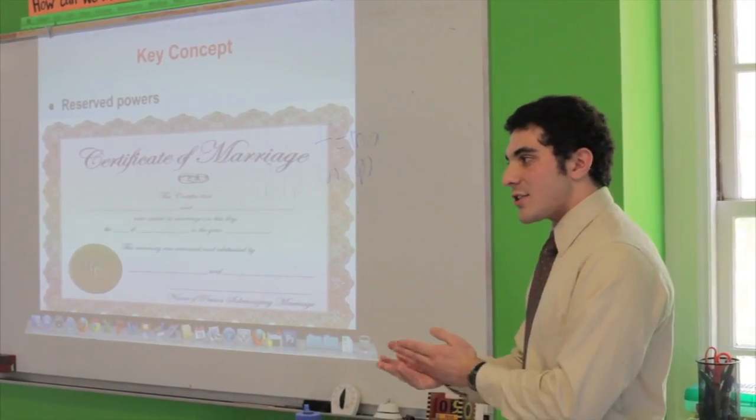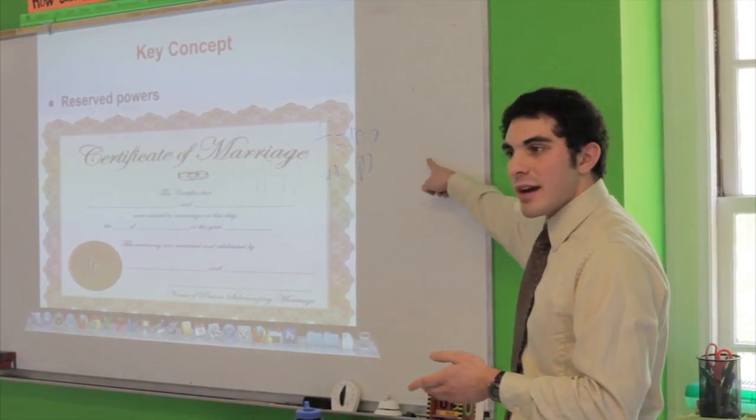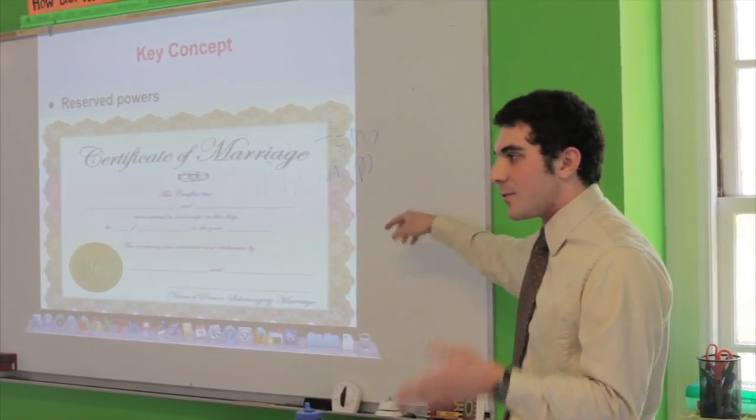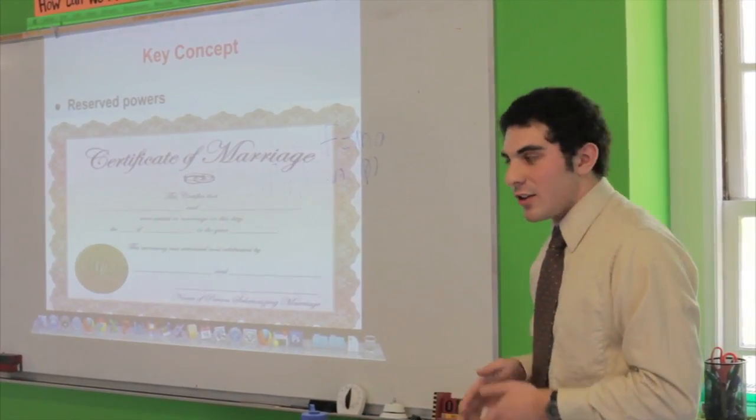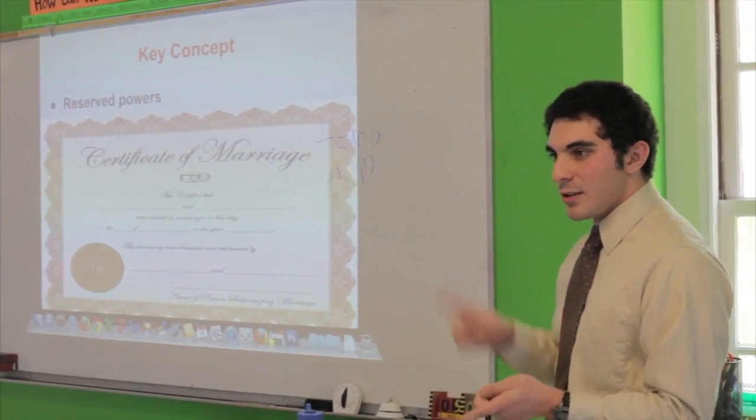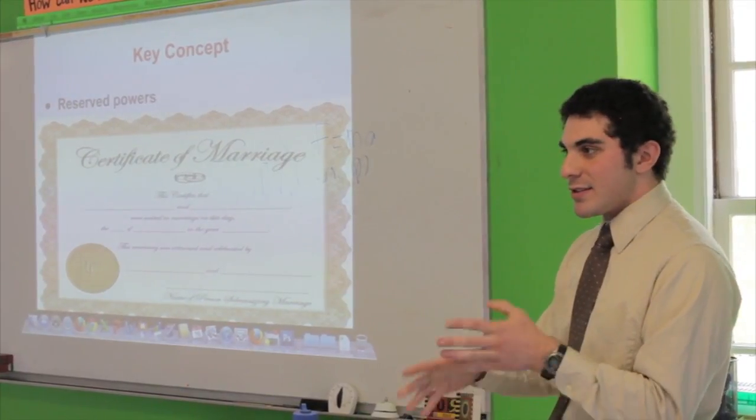So certain states allow certain types of marriage, certain states don't. But if the national government said, well we have the right to define what a marriage is, then states like California and North Carolina and other states wouldn't be able to say this is what marriage looks like. So that's just one example.